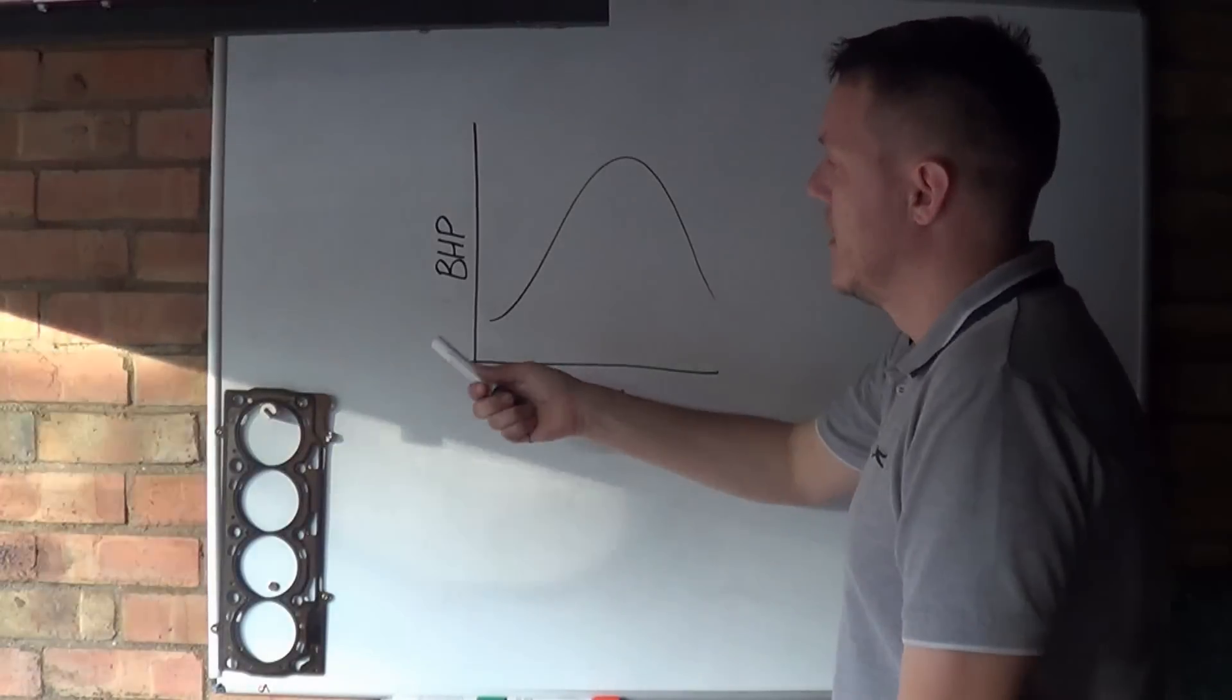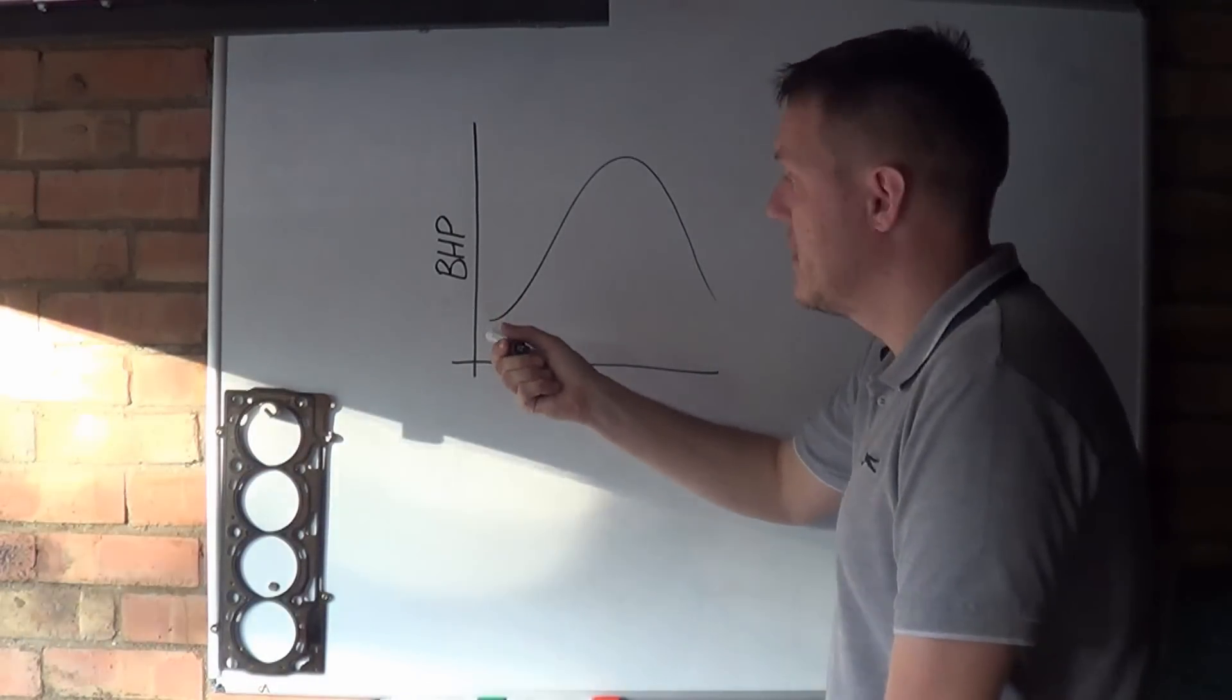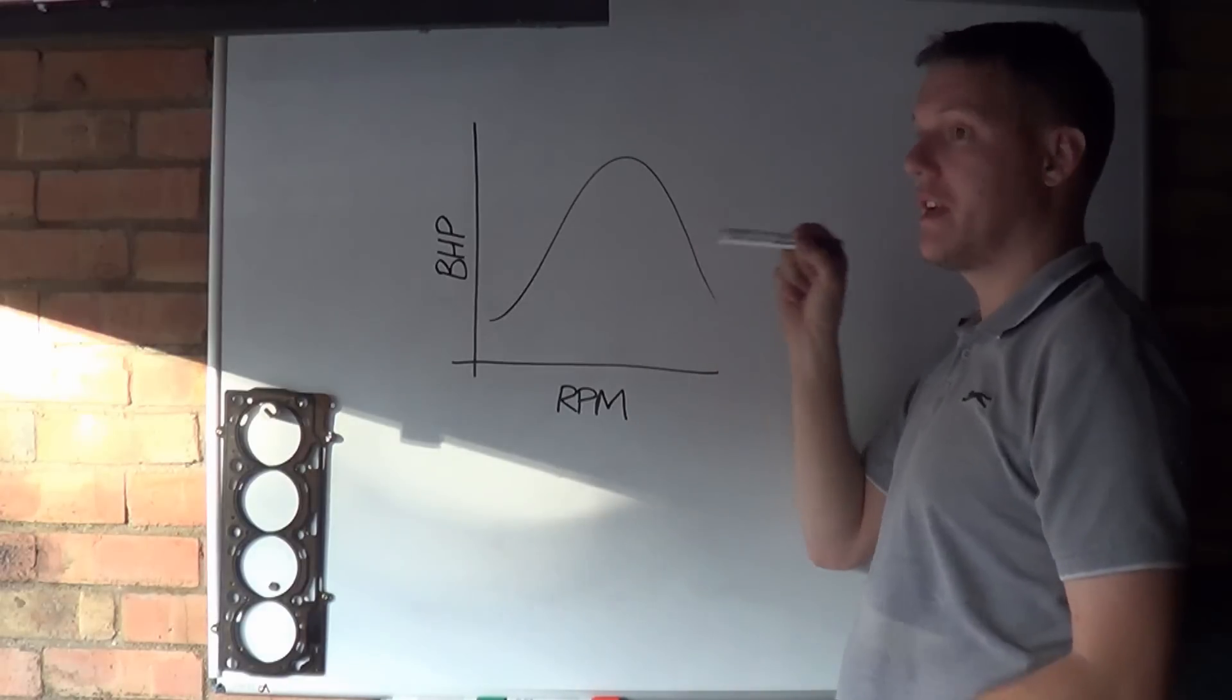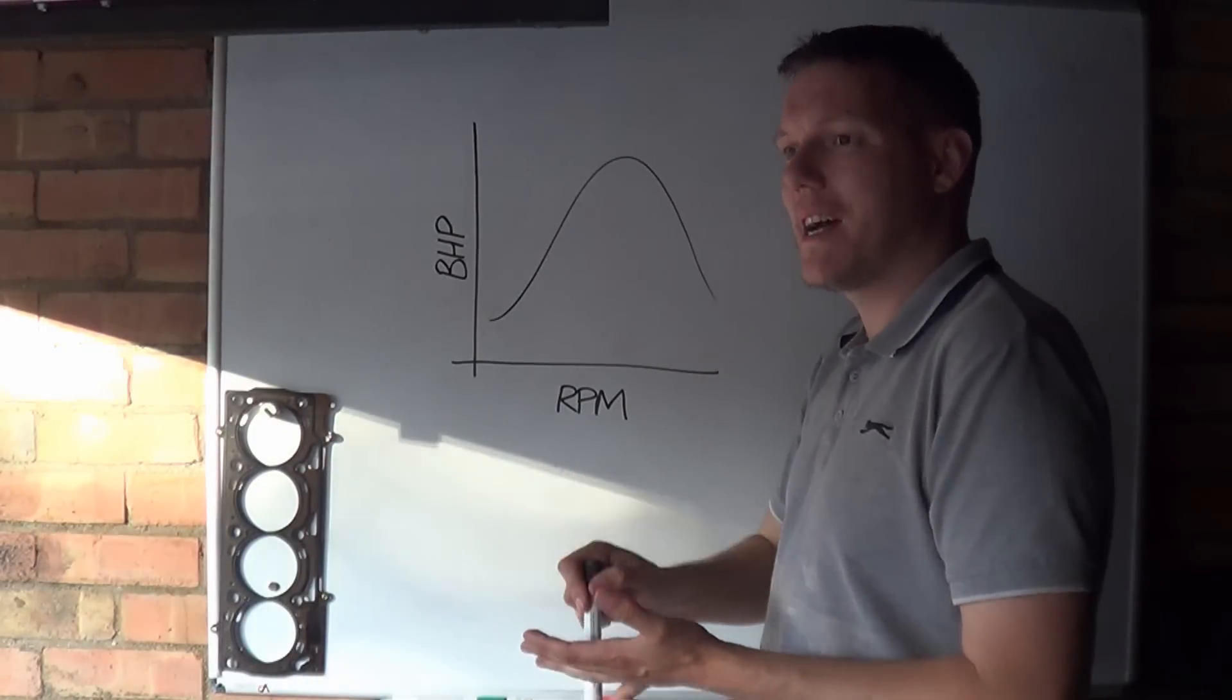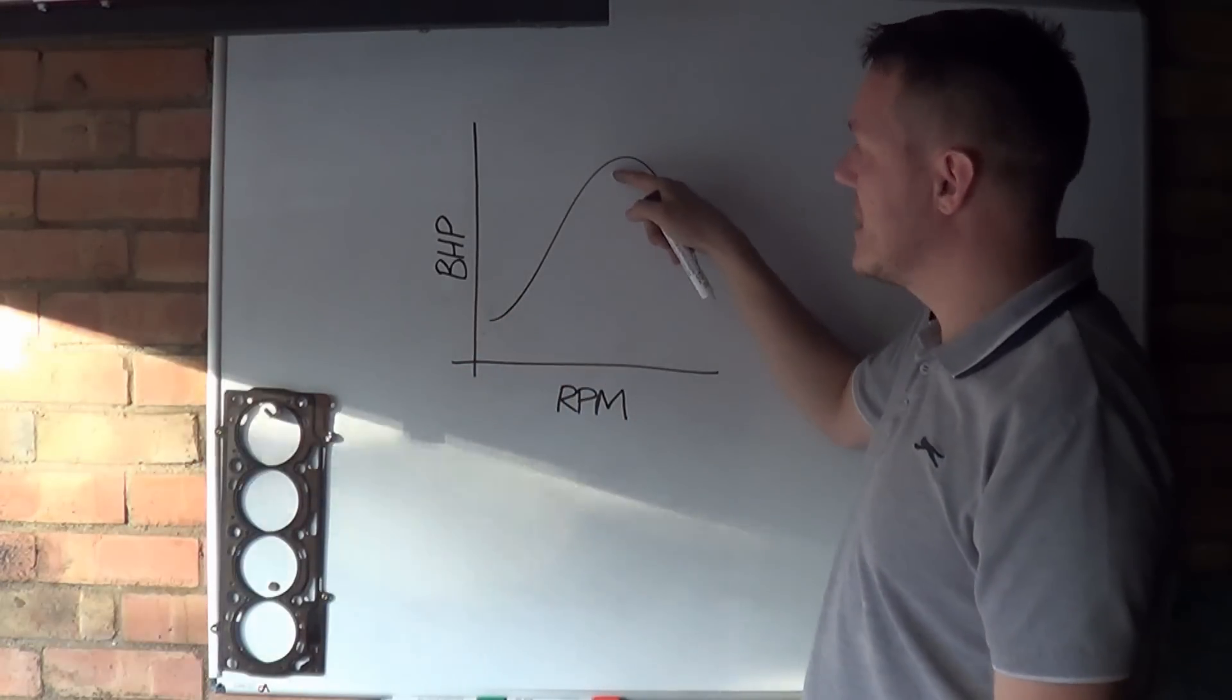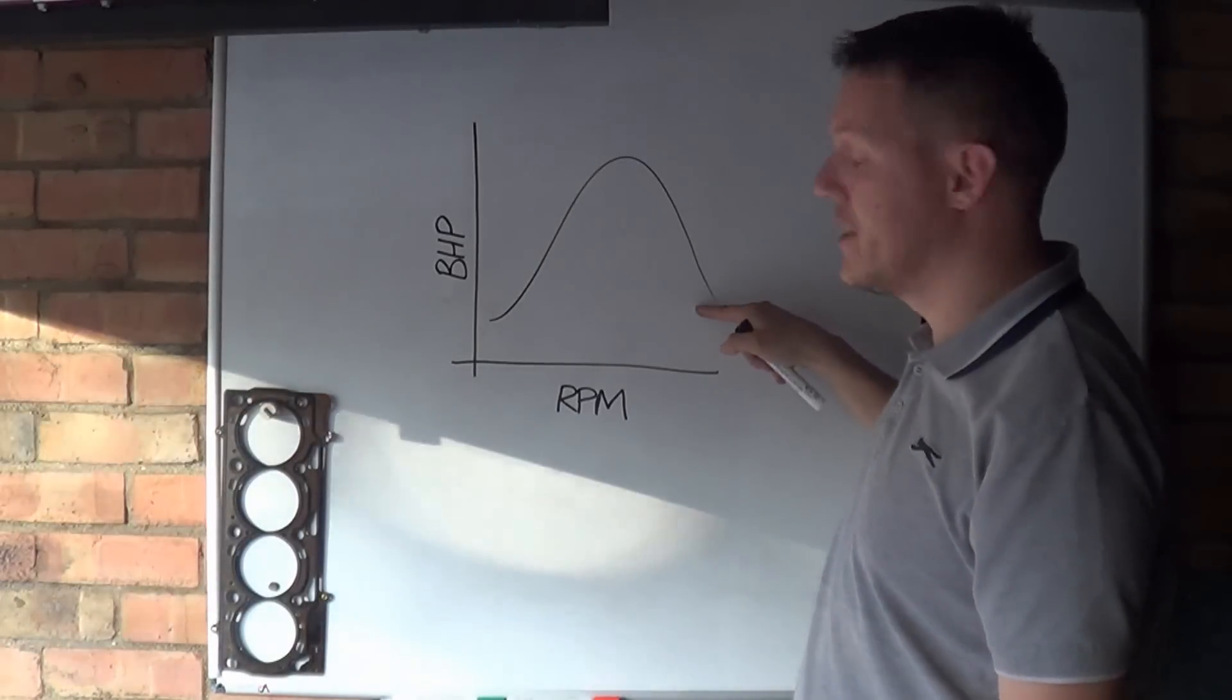In our engine, we'll find that at low RPM the horsepower is low because horsepower is a measurement of torque and RPM. If the RPMs are low, no matter how much torque you're producing, your horsepower is going to be low. Then you get to this sweet spot at the top, and then it starts to fall off again.